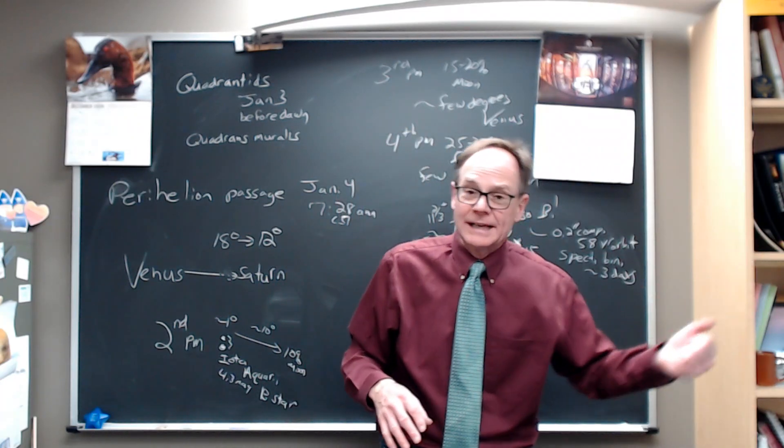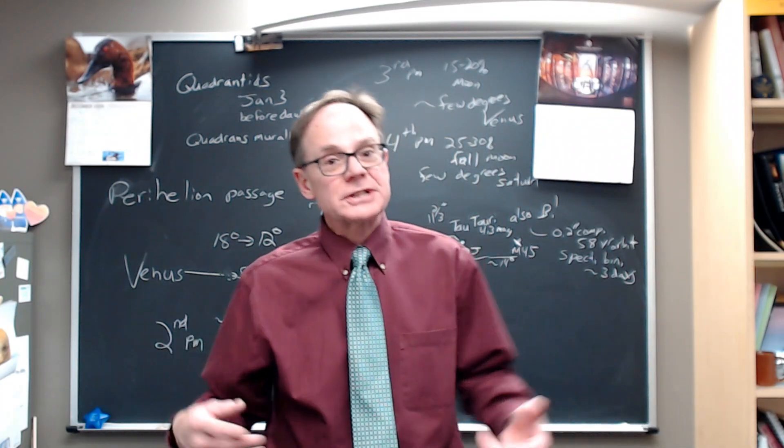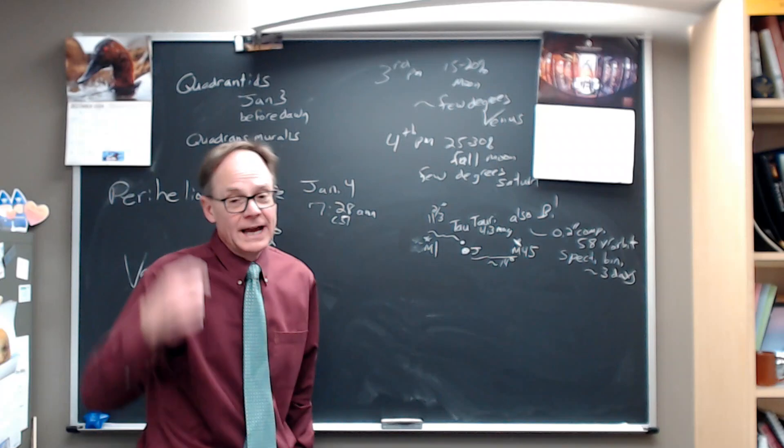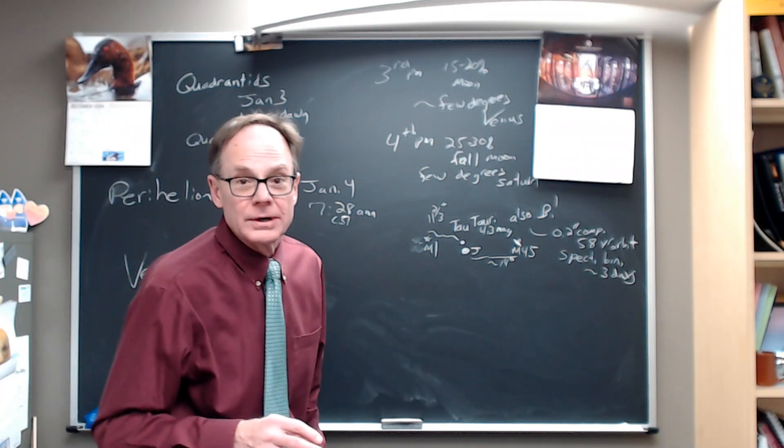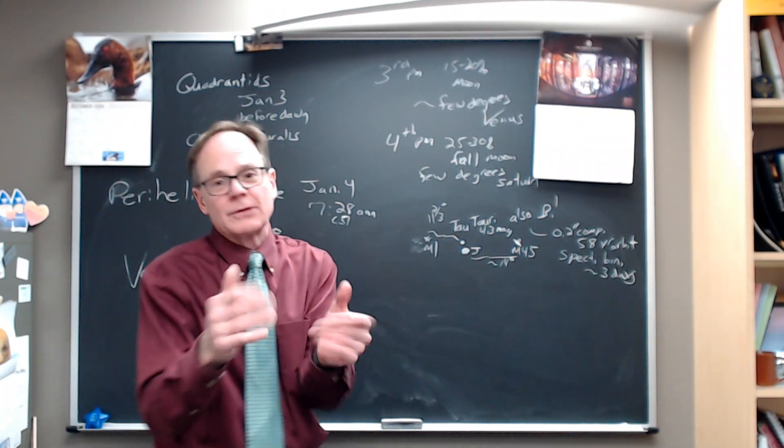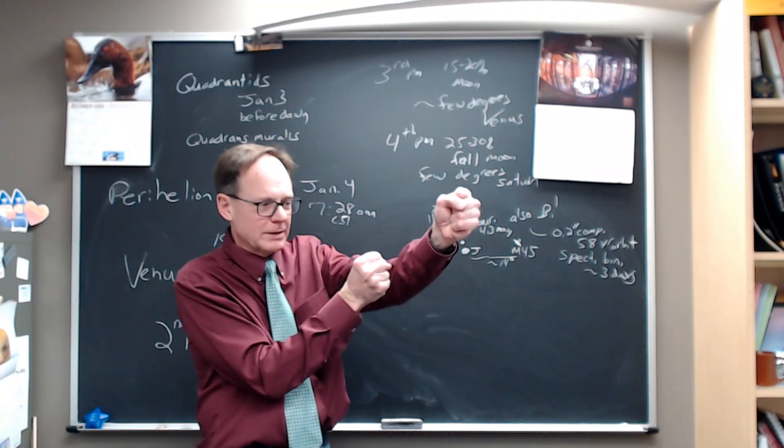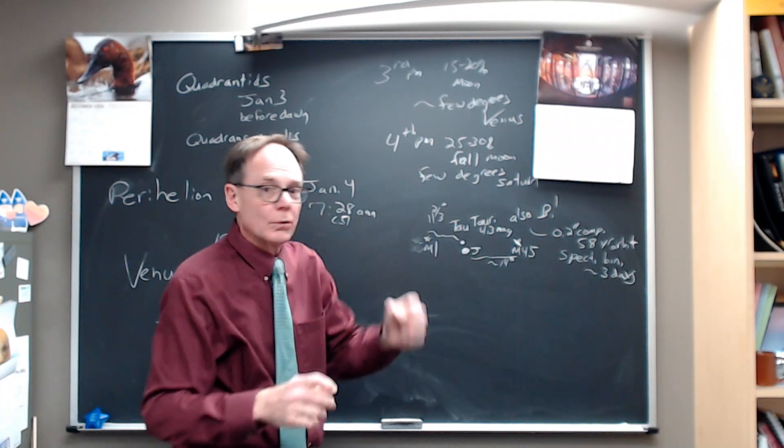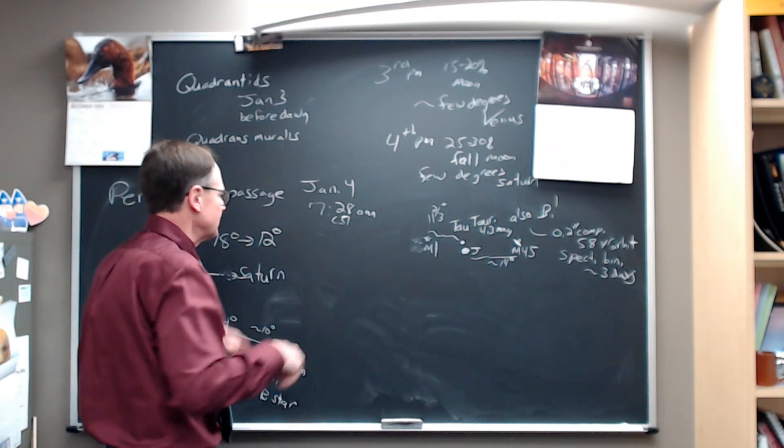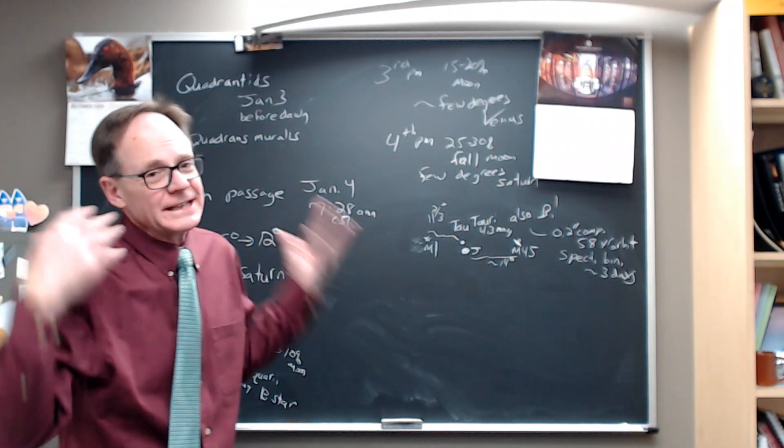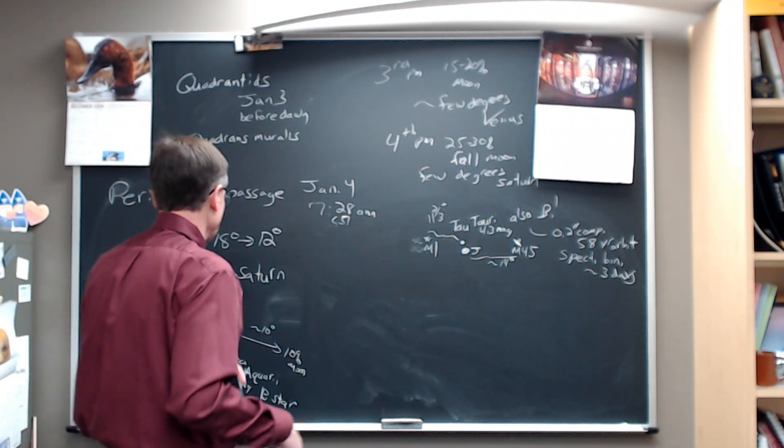But we've still been losing daylight on the morning side until just about the beginning of this week, and then we can start to gain it on the morning side as well. That's because everything was coming later than we would have expected if we'd been moving at a uniform speed in our orbit. So we just had more rotation to do. That's something to look at. We got that on January 4th.